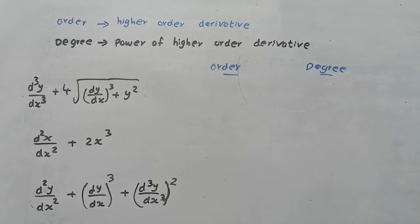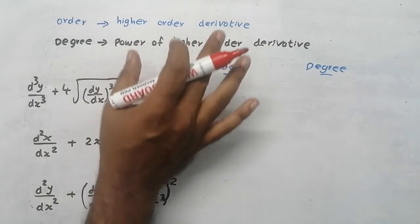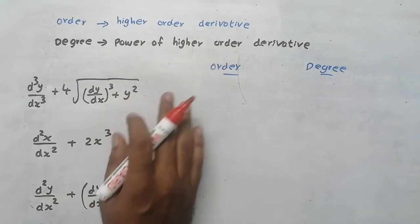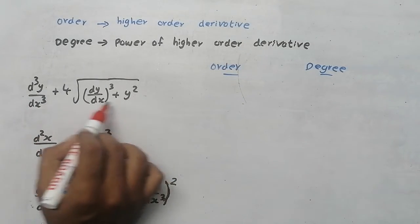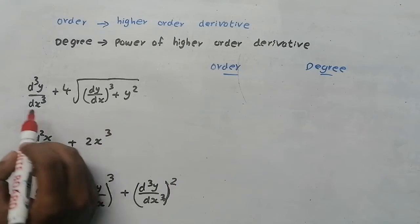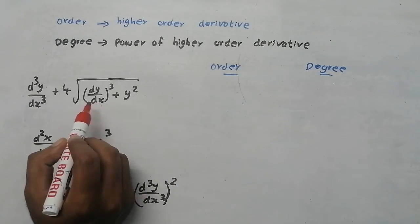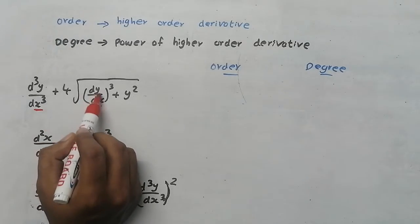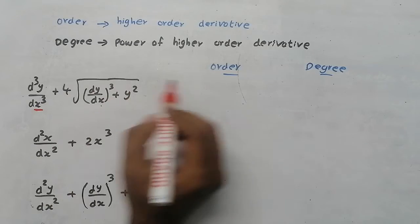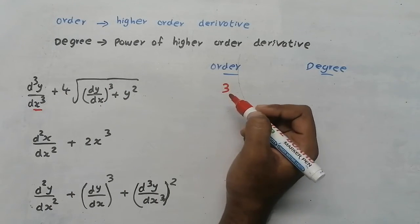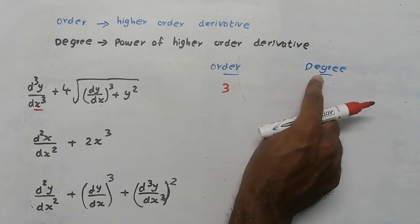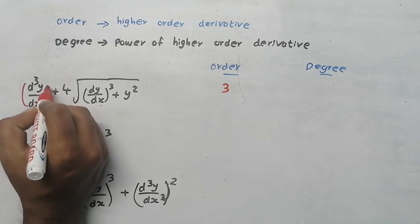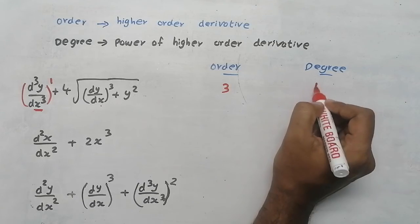Order means the term having the highest order derivative. Degree means the power of the higher order derivative. So in the first question, look at the terms — which term is having the highest order? This is a first order and this one is a third order, so order is going to be 3. Now what is degree? Degree is the power of the highest order. Here this is the highest order term and the power of that highest order is 1, so degree is going to be 1.